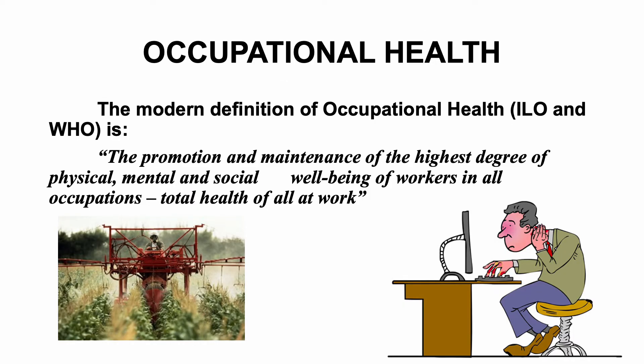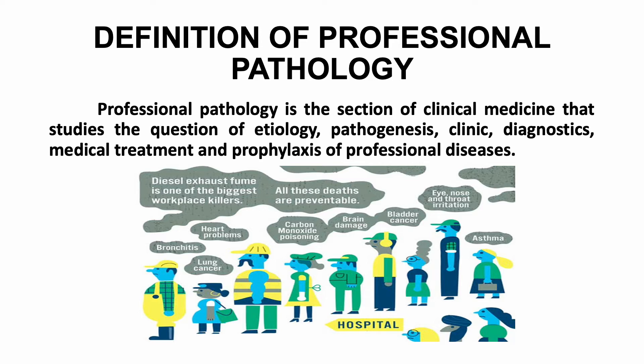Occupational health — what does this mean? The modern definition of occupational health is the promotion and maintenance of the highest degree of physical, mental, and social well-being of workers in all occupations: total health of all at work. Professional pathology is a section of clinical medicine that studies questions of pathology, pathogenesis, clinical presentation, diagnostics, medical treatment, and prophylaxis of professional diseases.